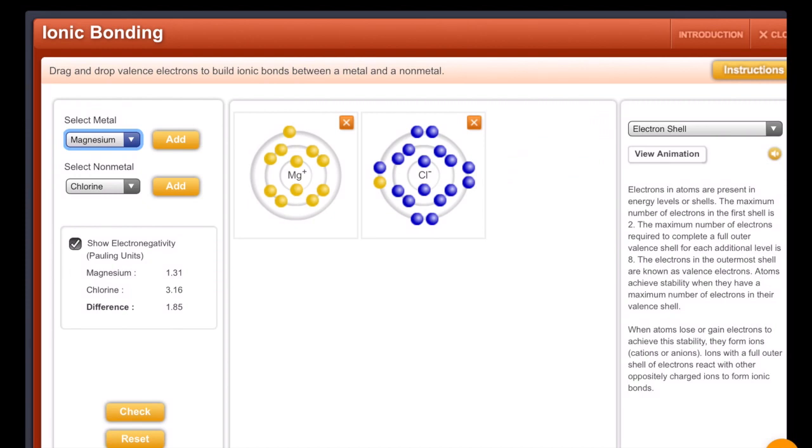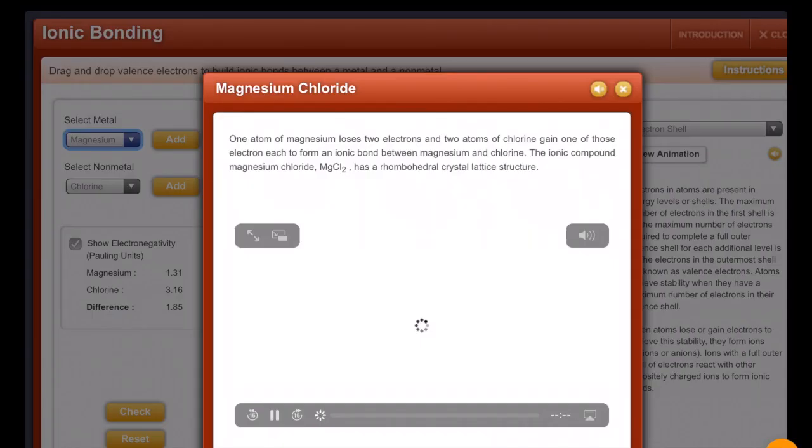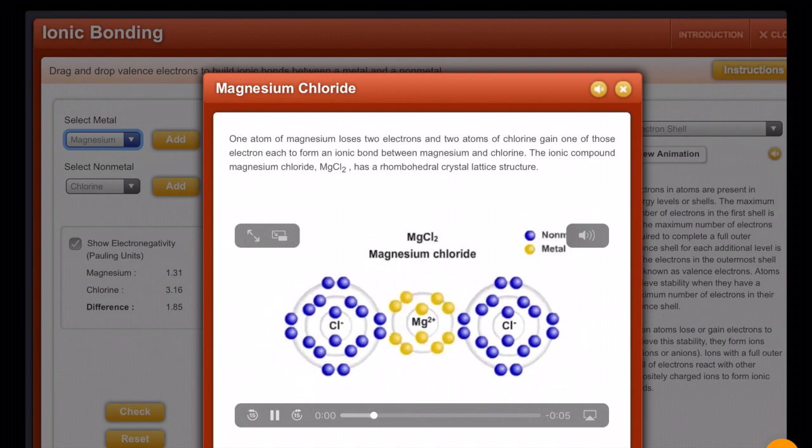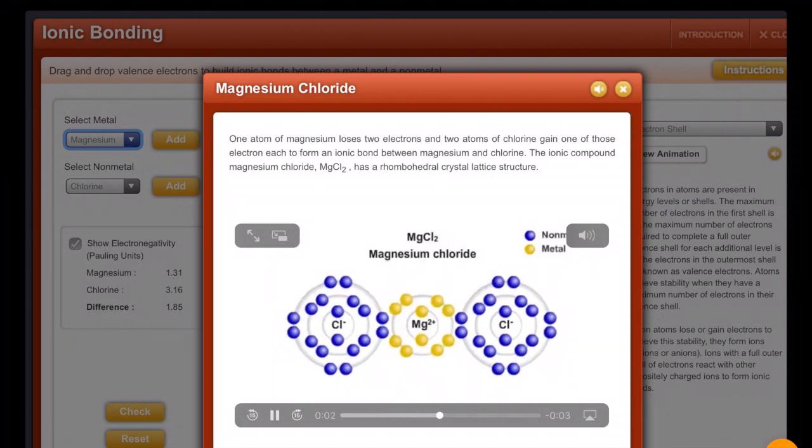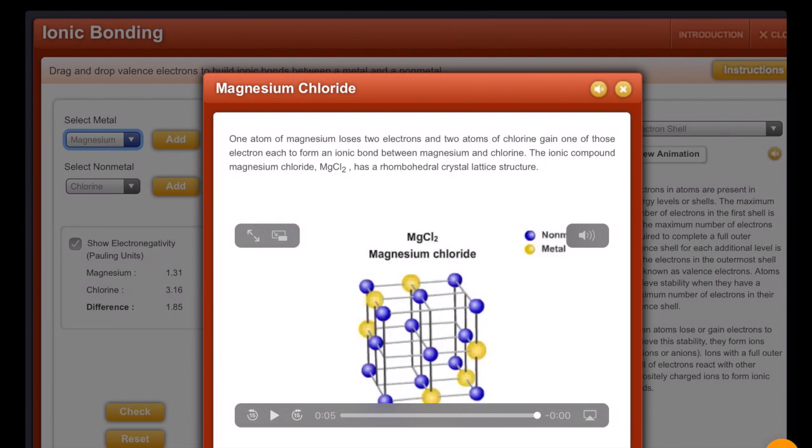So instead, what if I add a chlorine? Now notice how this chlorine needs another electron and I'm going to bring it and now check, you have correctly transferred the electrons. View the animation and it shows how two chlorine and one magnesium come together. And they have a crystal structure as well.